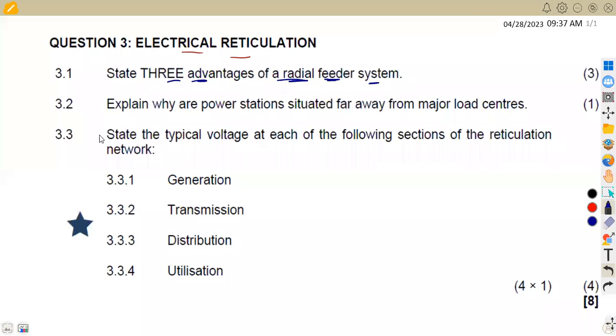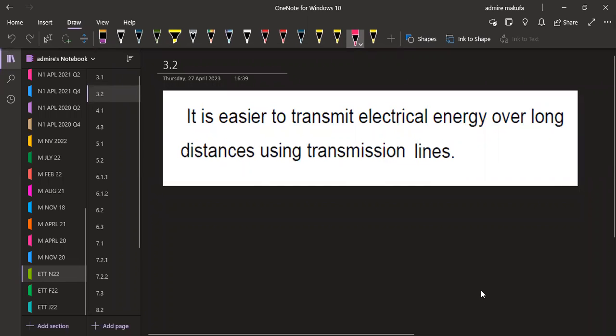If we check on 3.2, we are given to explain why power stations are situated far away from major load centers. So we can have so many reasons that we can give, but what is the major reason? This is the best reason that we can have: it is easier to transmit electrical energy over long distances using transmission lines. So that is why we are having them far away. Take note about this one.